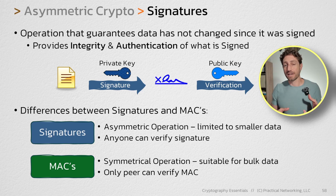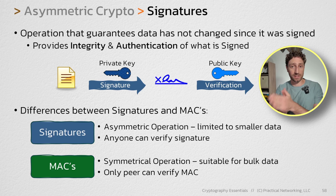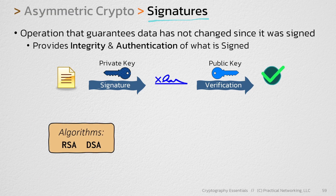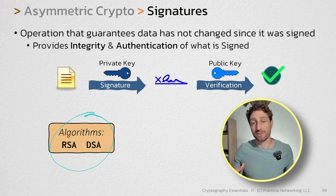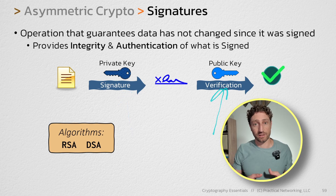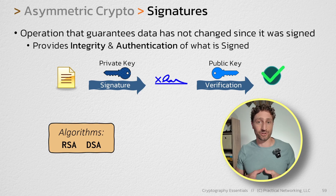So hopefully that better unpacks the difference between a signature and a MAC. Even though they both provide integrity and authentication, there is a time and a place to use one and a different time and a place to use the other. As far as algorithms, there are only two different algorithms that can create signatures: RSA and DSA. Both of these algorithms are just different methods and values you can use to create a signature and to verify a signature. The next two lessons in this series will look at how RSA does signatures and how DSA does signatures.